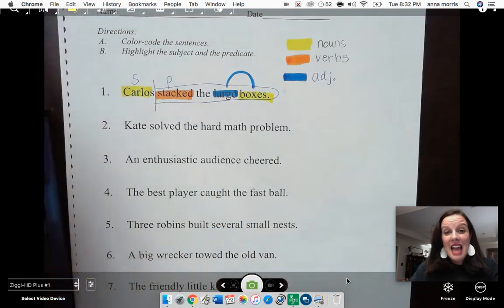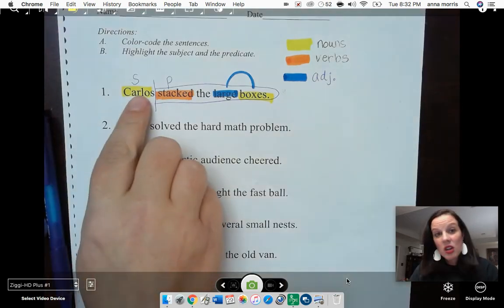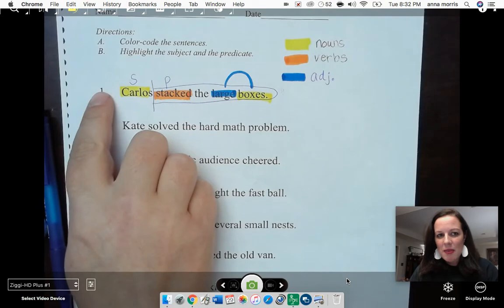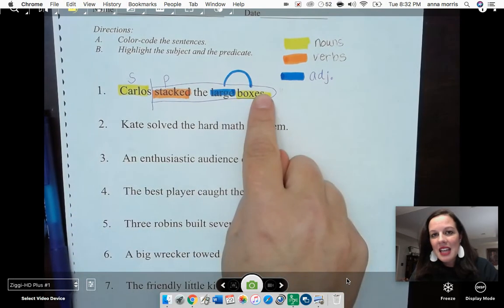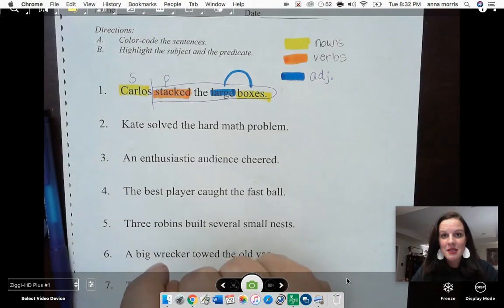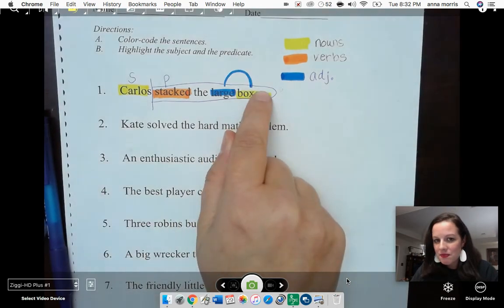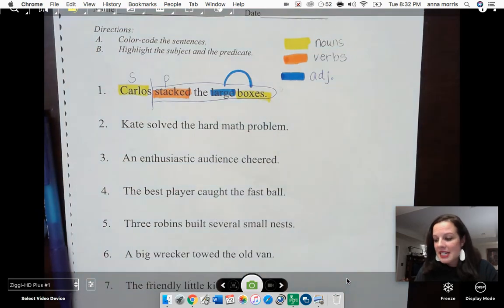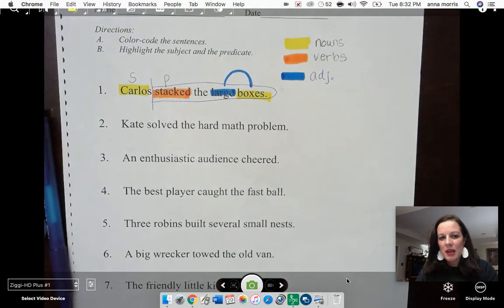Finally, we had to find the adjectives. In order to find the adjective, you have to find the noun. The first noun, Carlos, there's nothing describing it. Carlos does not have an adjective in front of it. But the second noun, boxes, there is a word that describes boxes. What kind of boxes? Large boxes. I also like to connect my adjective to the noun that it describes. Kind of makes a little rainbow.